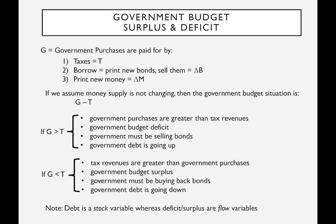If we focus only on fiscal policy with no change in the money supply, then G minus T determines the current government budget situation. If G is greater than T, government purchases exceed tax revenues, meaning a government budget deficit, and the government must be selling bonds — government debt is going up. If G is less than T, it has a budget surplus, is buying back bonds, and government debt is going down.